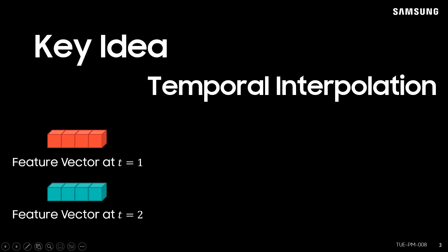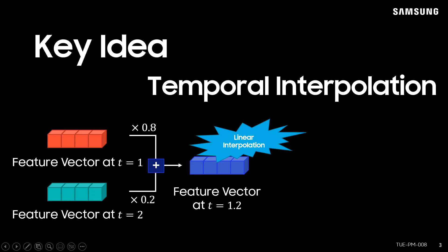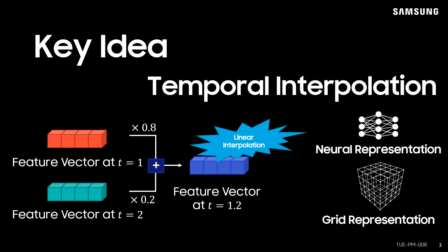The key idea of our method is to apply temporal interpolation for feature extraction. The feature vector of the target frame is calculated by a linear interpolation along the time axis. We propose two different feature representations, neural and grid.